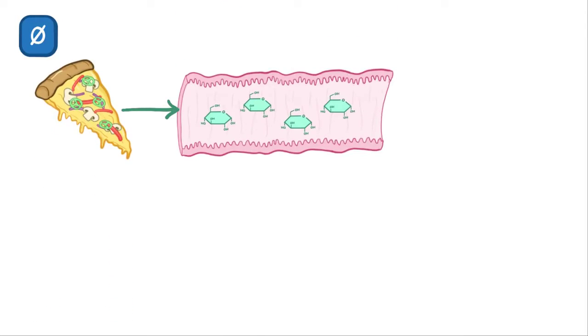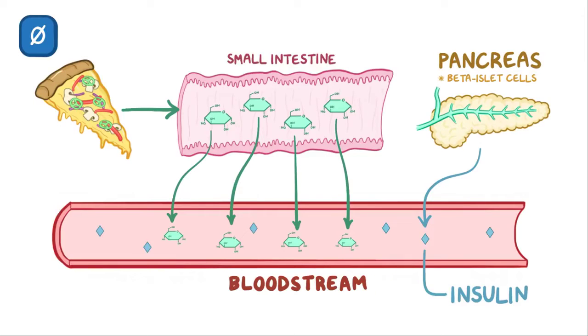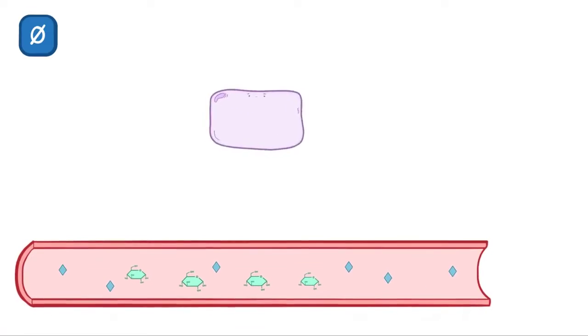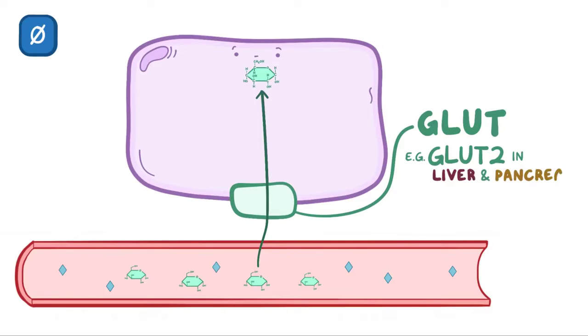Now going back to that delicious pizza, first glucose from those ingredients has to get from the small intestine into the bloodstream. In response to high blood glucose, the pancreatic beta cells secrete insulin. To get inside the cells, glucose utilizes glucose transporters, or GLUT, which are in the cell membrane. In fact, some glucose transporters like glucose transporter 2 in the liver and pancreatic beta cells are particularly responsive to glucose in the presence of insulin.